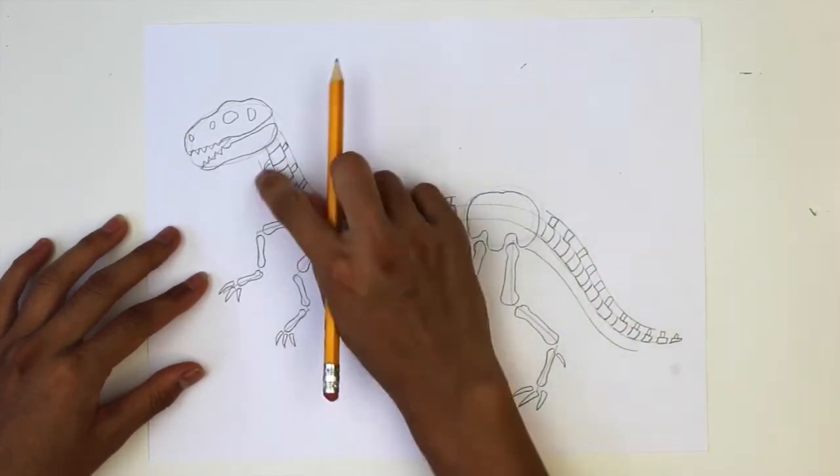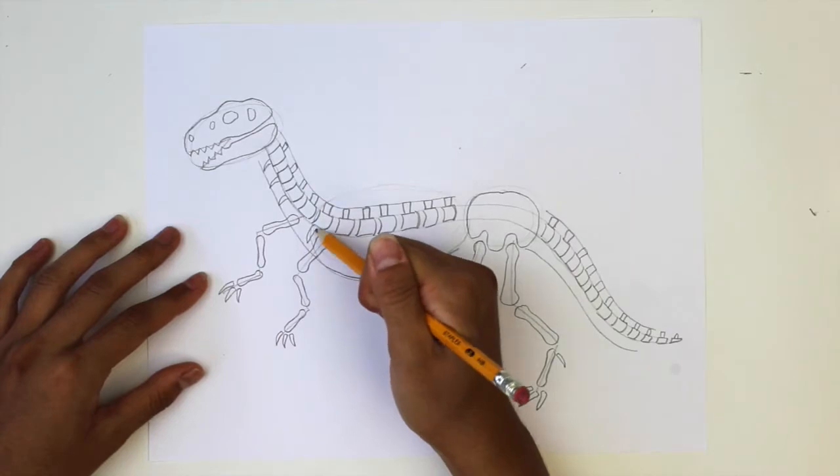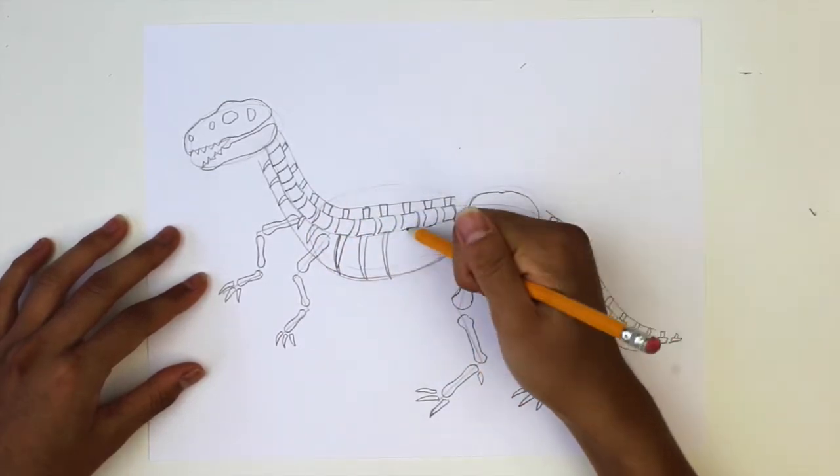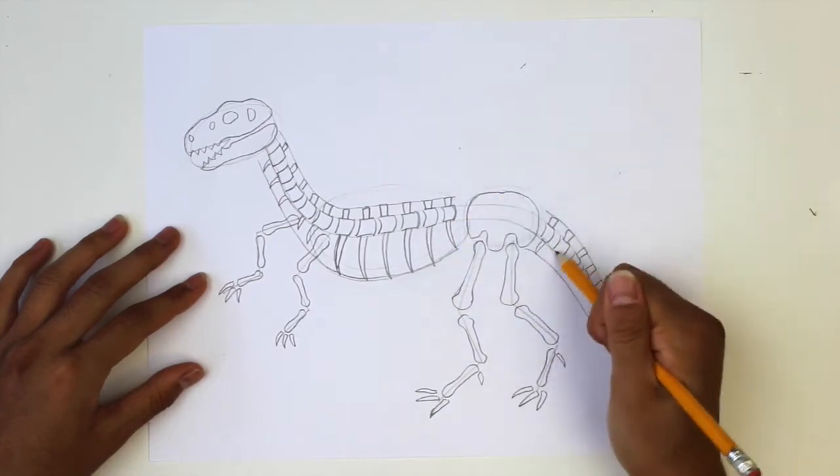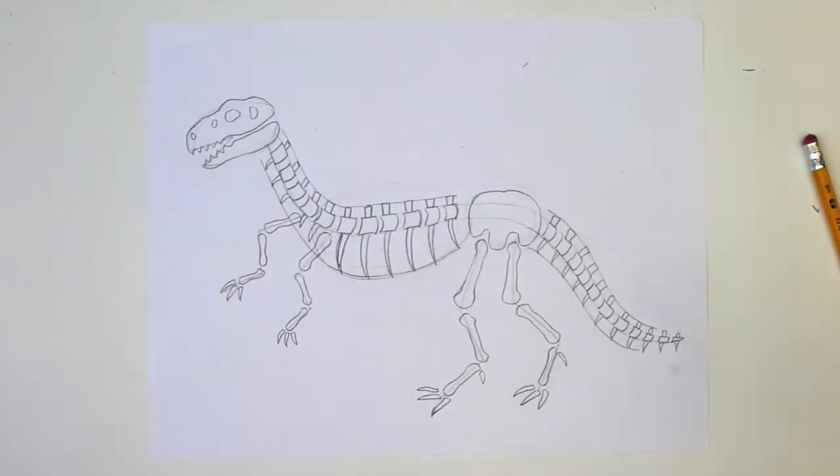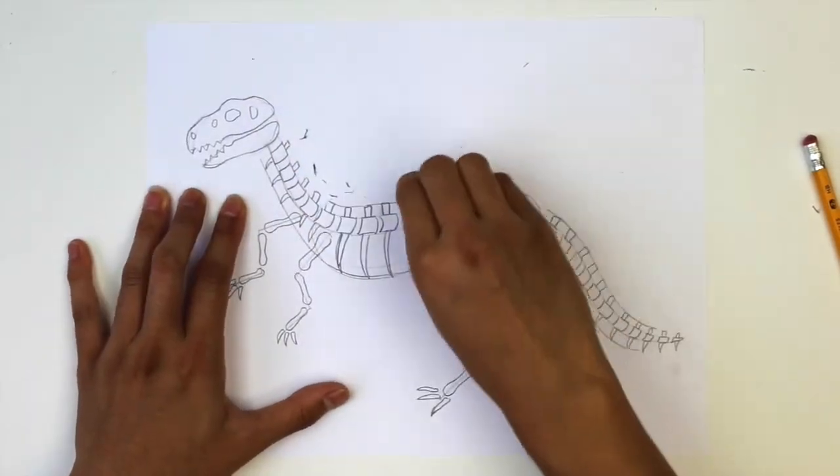Then underneath the segment, draw a curved claw-like bone that gets longer at the ribs. Make sure the bone curves to the right and touches the guideline you drew earlier. Now we can erase all the guidelines inside the bones and between the spine.